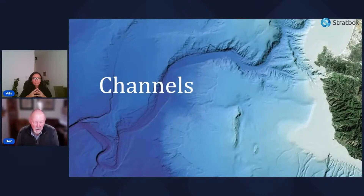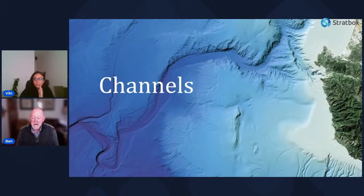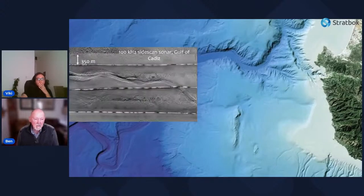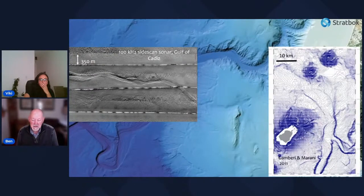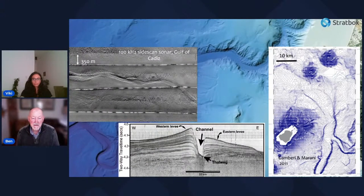Submarine channels are conduits through which sediment gravity flows — like turbidity currents and debris flows — pass on their way further down dip. Modern channels are negative features on the seafloor, much longer than wide, varying in scale over two orders of magnitude. I compare a channel from the southwest coast off Spain, only about 100 meters wide, with one from the Tyrrhenian Sea offshore Italy that is about eight kilometers wide. Where they aren't bounded by erosion surfaces, they typically have levees built up by overspill, such as the North Atlantic Mid-Ocean Channel, where the channel itself is several kilometers wide and the levees tens of kilometers wide.